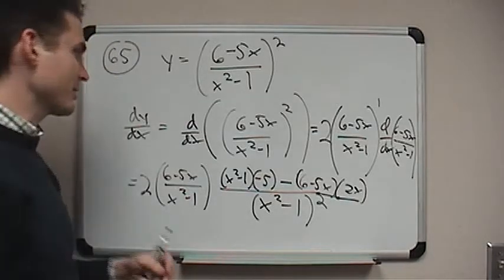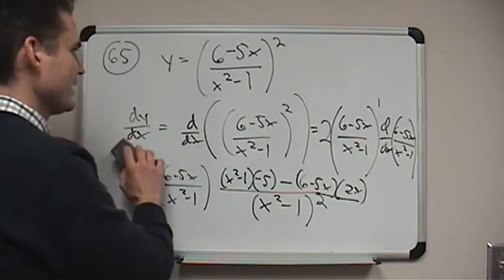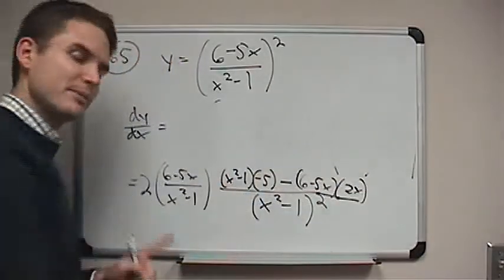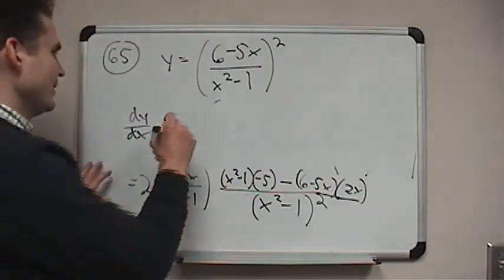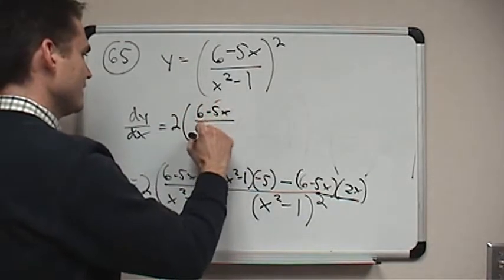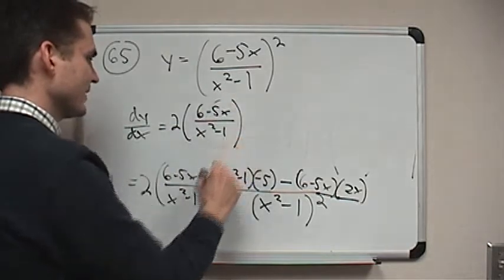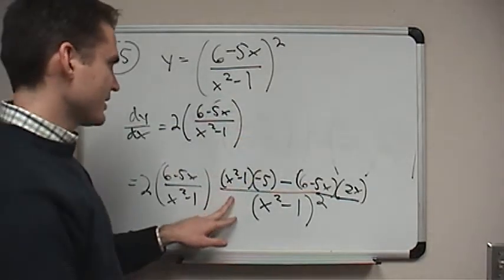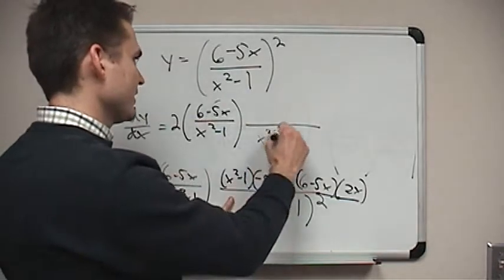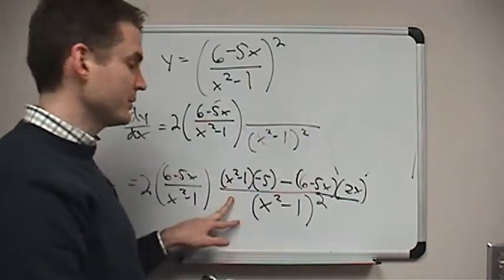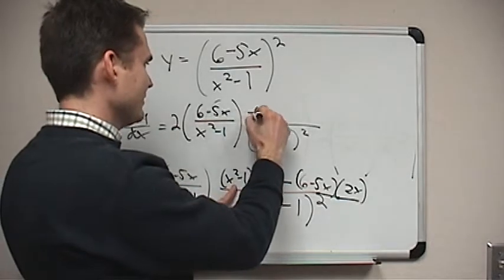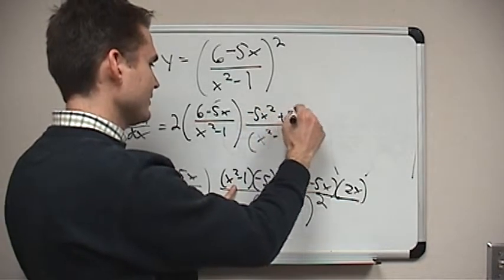Well, again, you know, one of the more drawn-out problems. I need some more board space here. But I can probably get it pretty well wrapped up in one more line. What do I got here? 2 times 6 minus 5x over x squared minus 1. Okay, now this I need to simplify, so what do I have here? Well, x squared minus 1 squared, we don't need to do anything with that right now. But the numerator is going to be negative 5x squared plus 5.